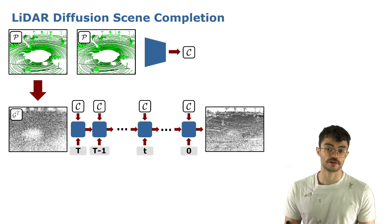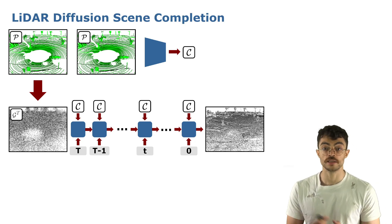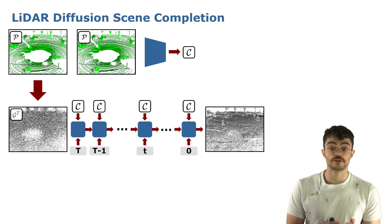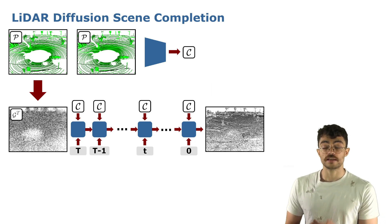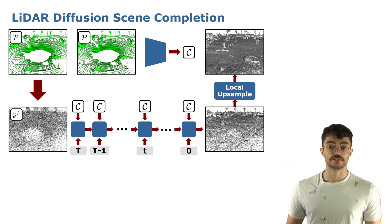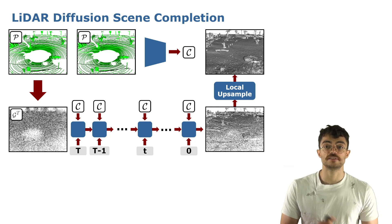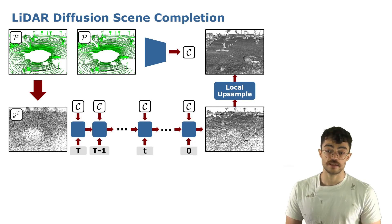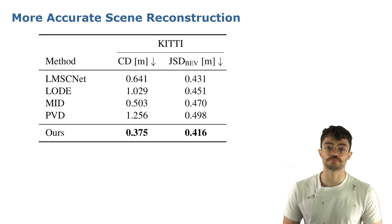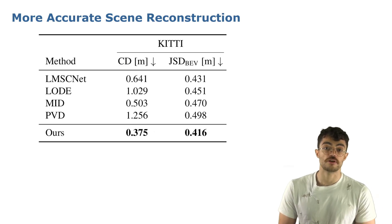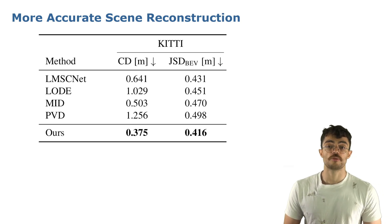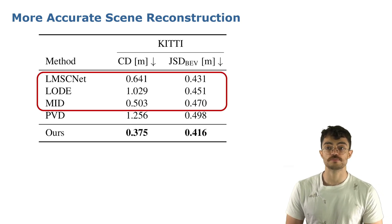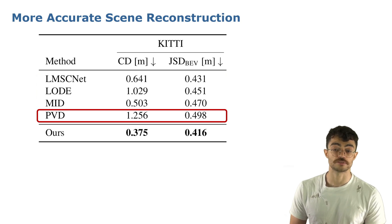But this representation is still quite sparse, as you can see, due to the computational resources demanded by the diffusion process. Therefore, we train a second model to do a local upsampling of this prediction, such that we arrive at a complete and dense scene representation. Our results show that our approach achieves more detailed scene reconstruction compared to previous scene completion methods, and especially compared to previous point diffusion methods.